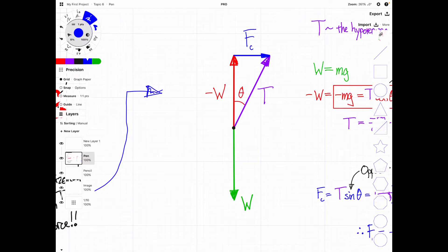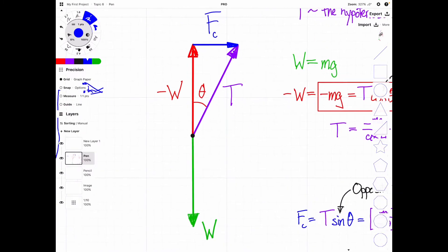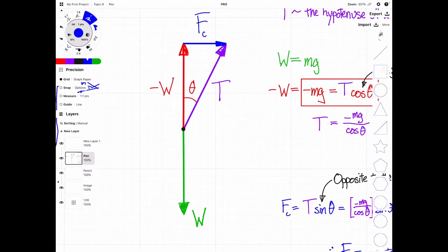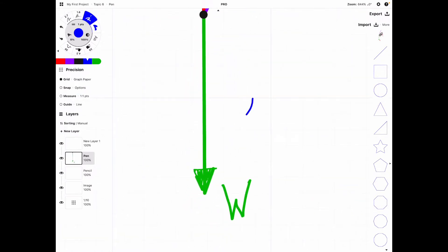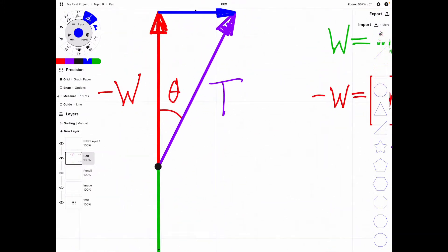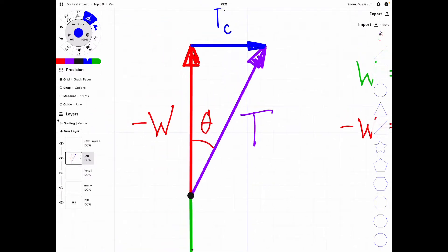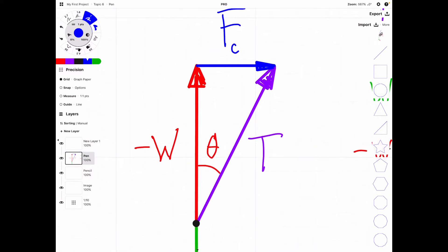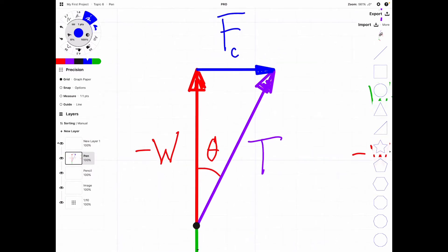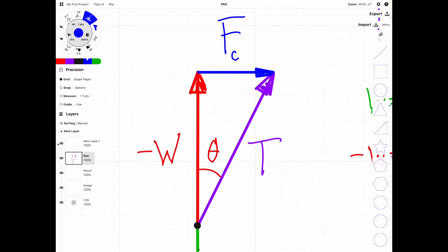All right, so here is a breakdown of our free body diagram. What we have here is weight, as we've seen, and we have tension, and then we have the components of tension in red. So we have the vertical component of tension shown, and we have the horizontal component of tension. And as I said earlier, that horizontal component is our centripetal force.